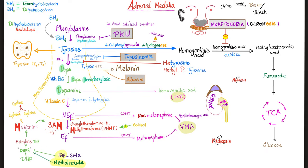Tyrosine has options — many options. It can help you make thyroxine and thyroid hormone. It can help you make dopa, dopamine, norepinephrine, and epinephrine — i.e., the catecholamines — in nerve fibers or the adrenal medulla. Only the adrenal medulla can make epinephrine. Tyrosine also has other options: it can help you make melanin in the melanocytes of your skin. If you want to break down tyrosine, we go down this pathway, and it can give you fumarate and acetoacetate — both are sources of energy for your body.